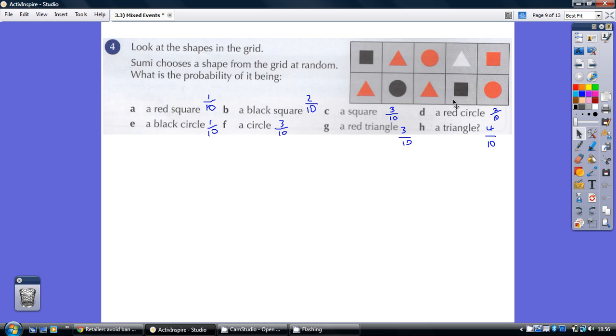And so on. Just have a look at all the answers. Probability of a square? Well, we've got a red and two blacks, so that's three squares, three out of 10, and so on.